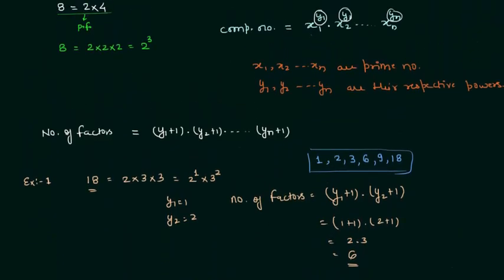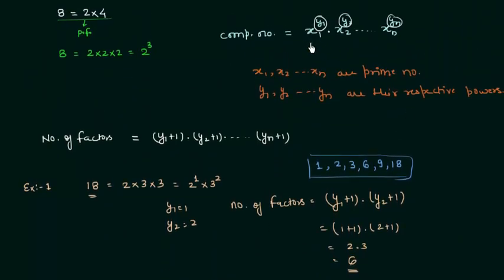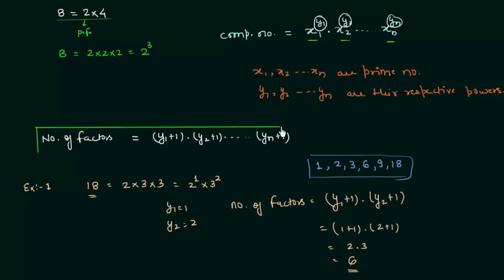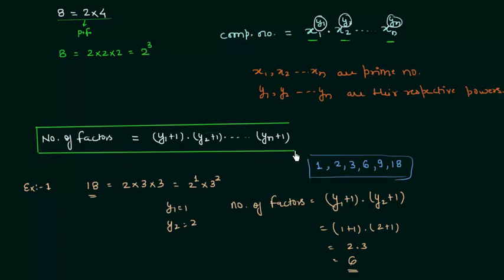This is a simple 3-step process. First, find the prime factors. Second, increment the indexes by 1. Finally, multiply them together — this gives the number of factors for the given composite number. This is a very important topic and there may be a question on it in your exam, so remember this formula and use it directly.